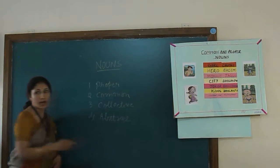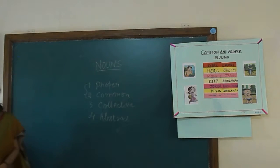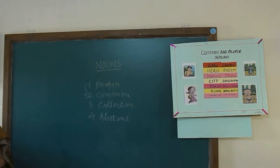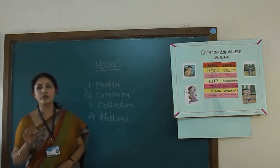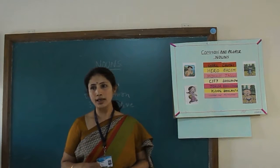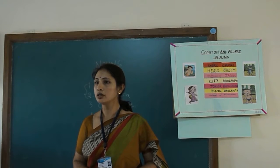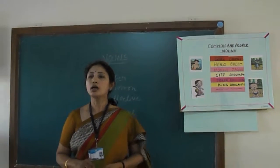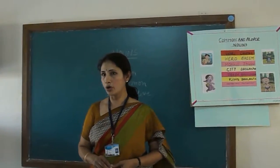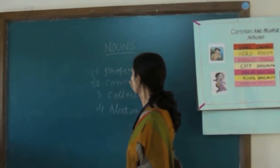In this class I am going to cover only the proper and the common noun. As we all know, a proper noun — the name itself tells us it is the proper name of a person, place, or thing. For example, if I say 'a boy,' it is not the name of a boy. But if I say 'Ramu,' it is the name of a boy — that is the proper name, so we call it a proper noun.